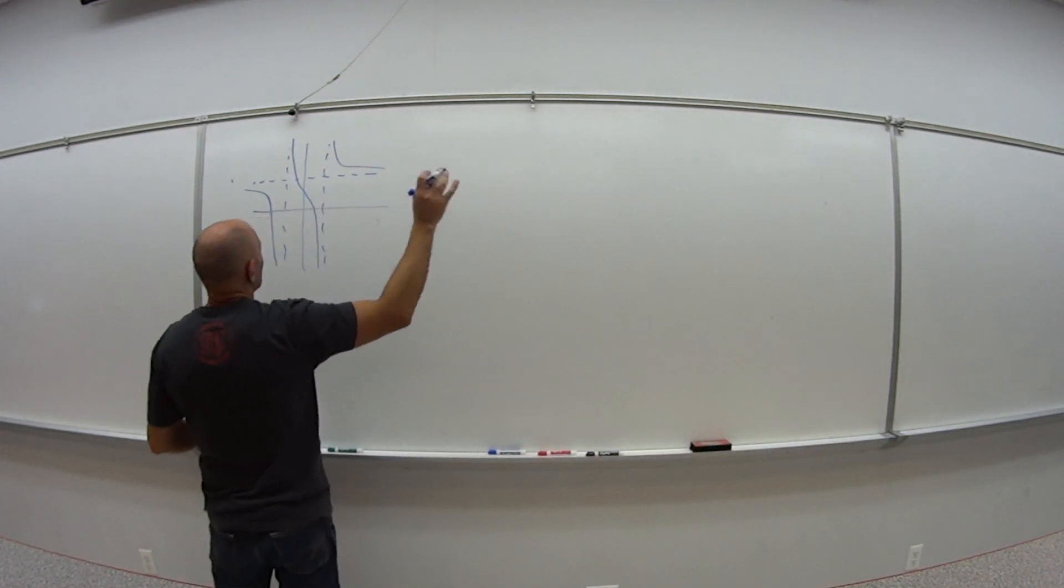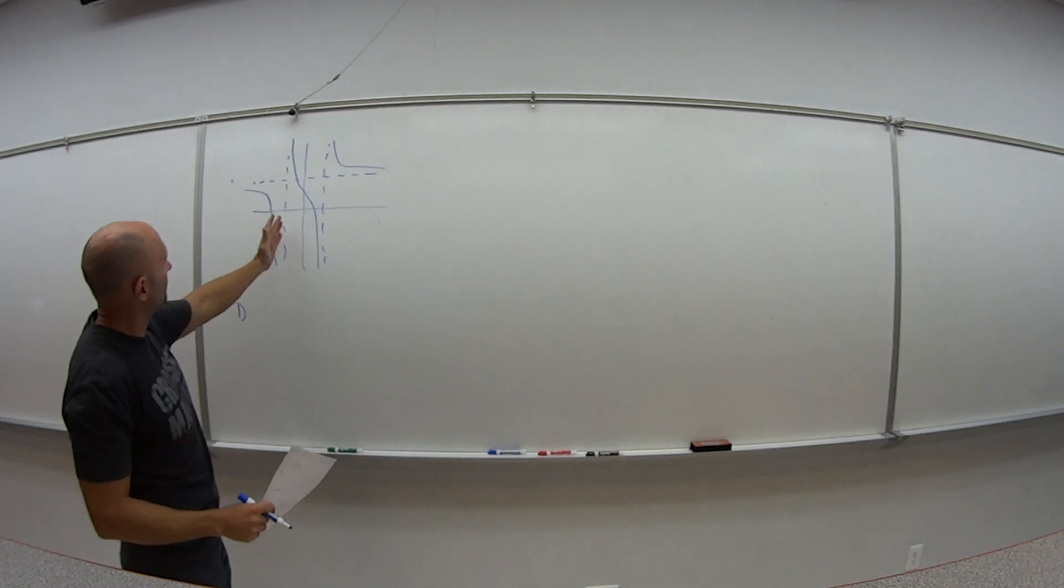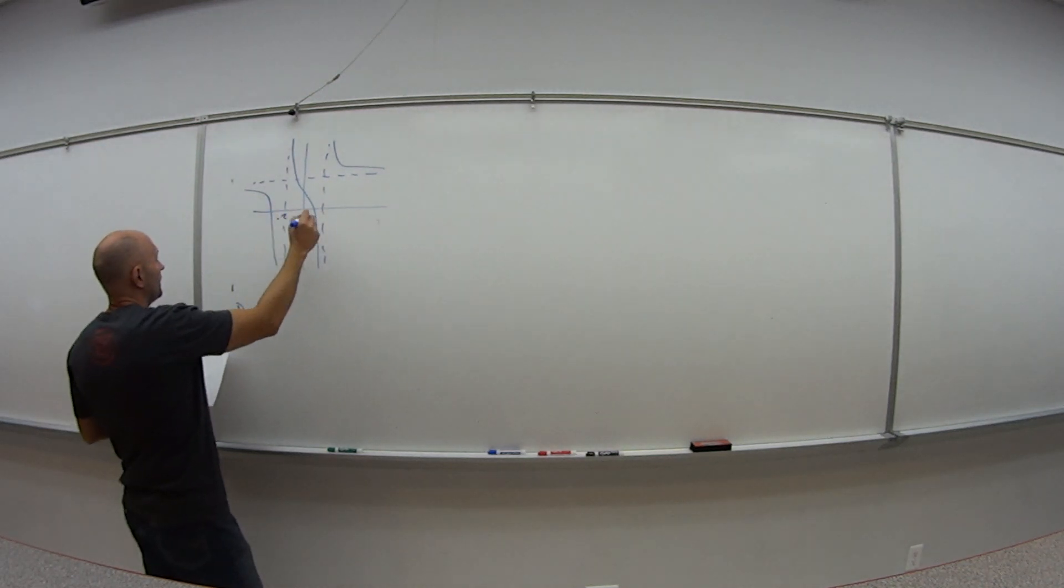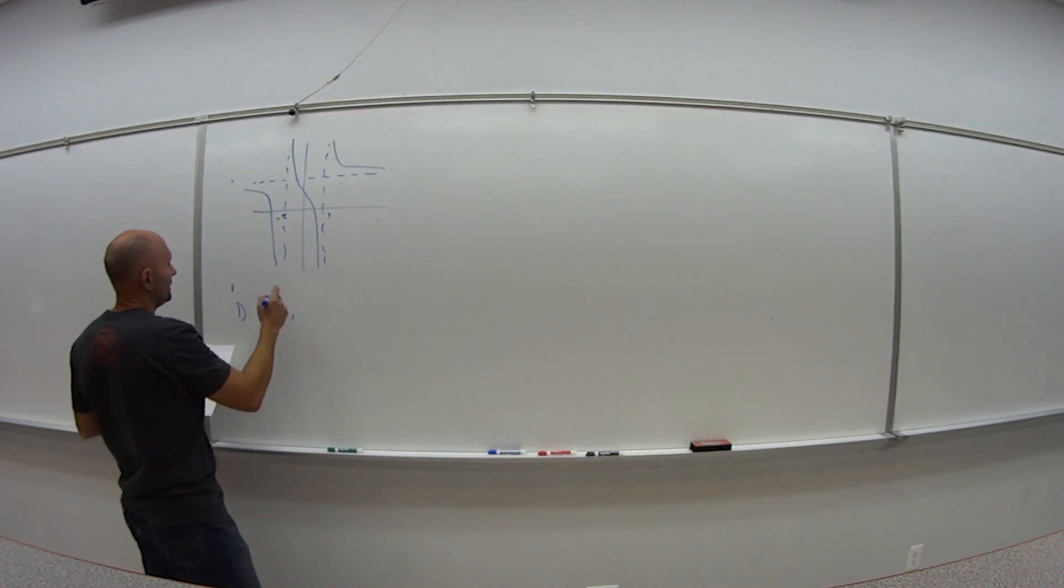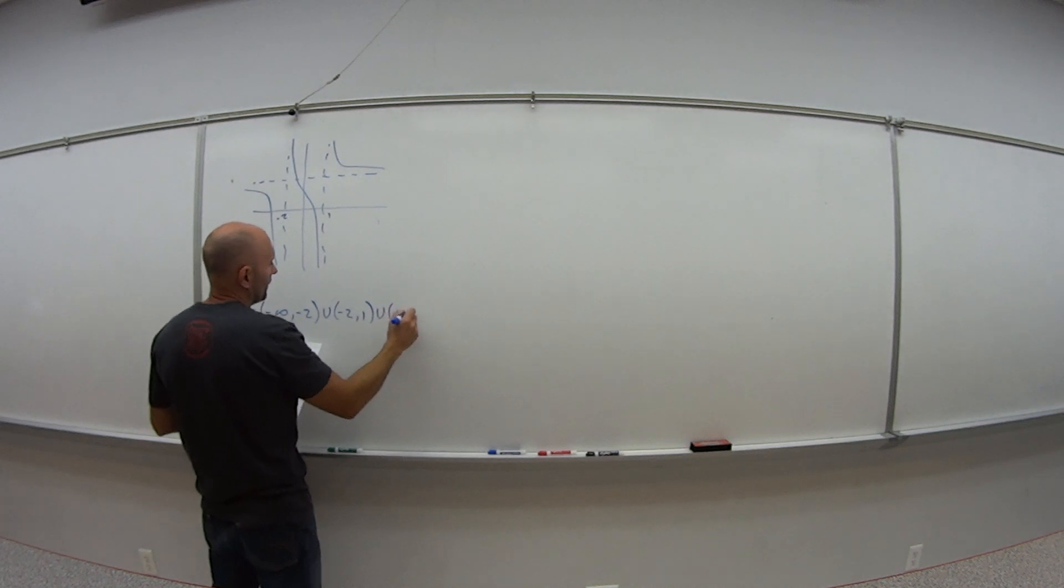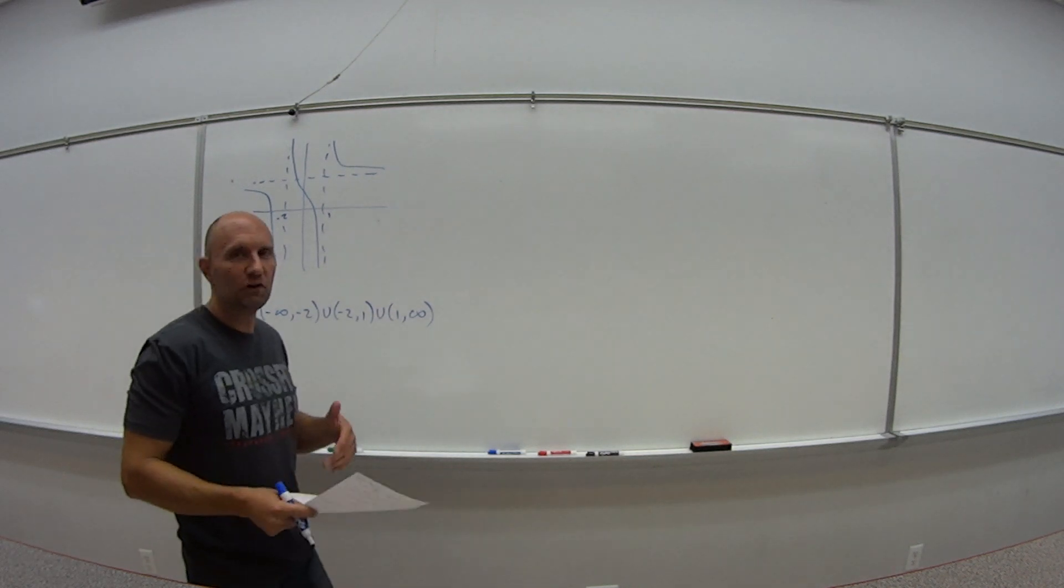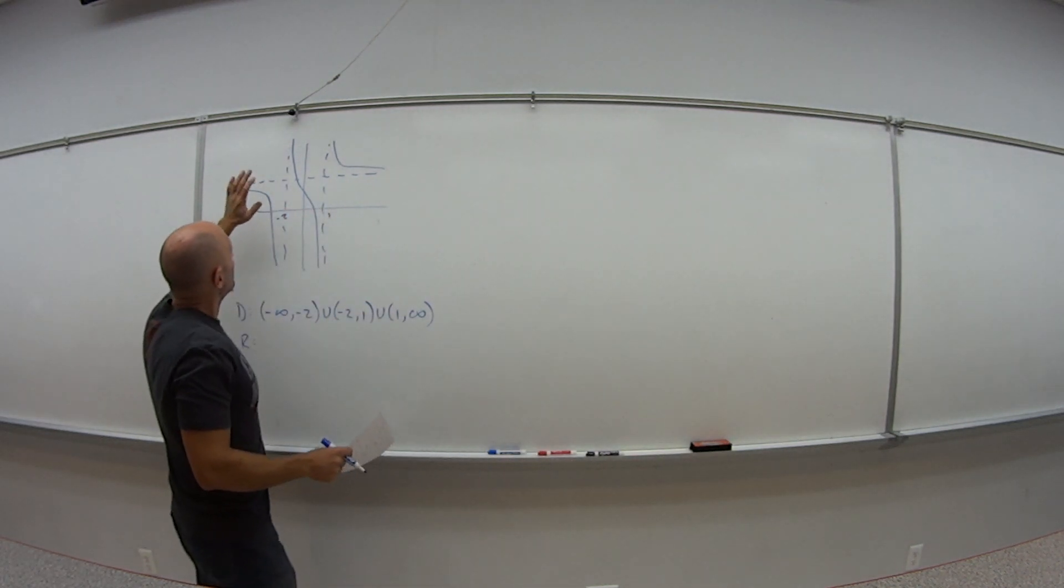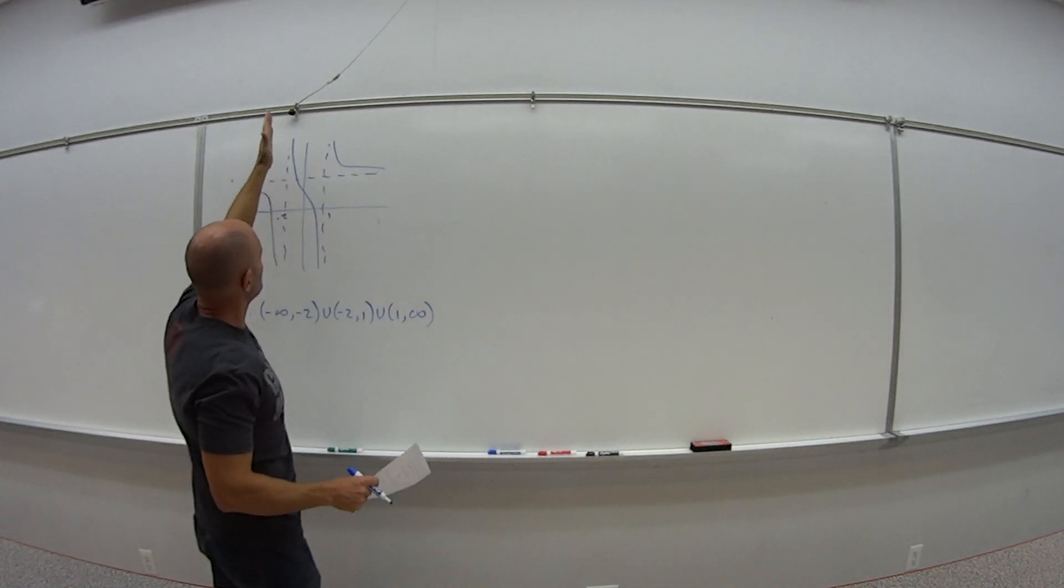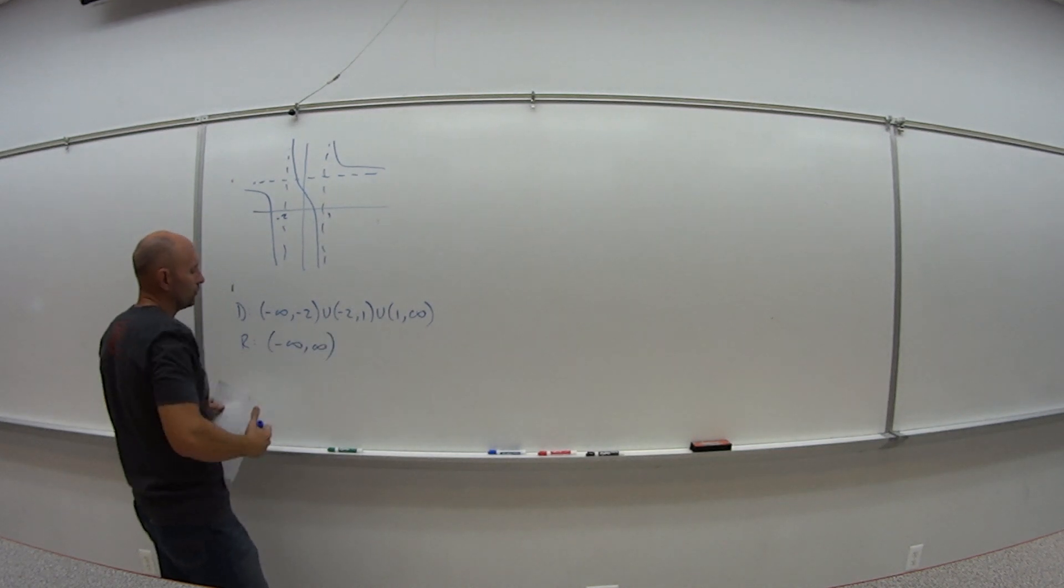So again, I had already raised the board, so here's a quick sketch of what it looked like. So my domain was what? Well, my domain is everywhere except for where I have the vertical asymptotes. So that was at negative 2 and positive 1. So my domain would be negative infinity up to negative 2, union negative 2 to positive 1, union positive 1 to infinity. And my range is what? My range is all the y values. Well, if I didn't have this middle section, it would be everything except positive 3. But because this middle section runs from negative infinity to positive infinity, then my range is actually all real numbers.